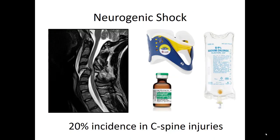Even if you're suspecting neurogenic shock, treat it as if it's hemorrhagic shock. If you have a hypotensive trauma patient, evaluate all places they may bleed — plug the hole, stop the bleeding, put that pelvic binder on, splint the fractures, and give fluids for permissive hypotension. If that's still not working and you have a longer transport time, then you can consider neurogenic shock and consider starting a pressor.